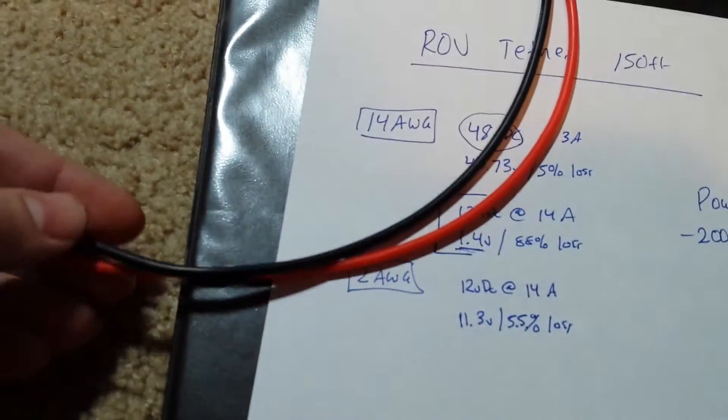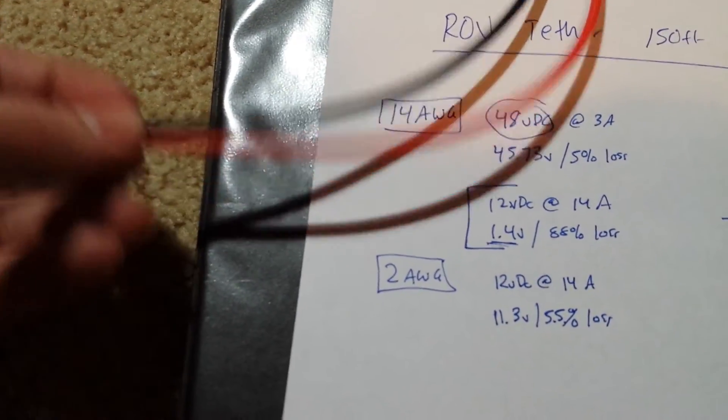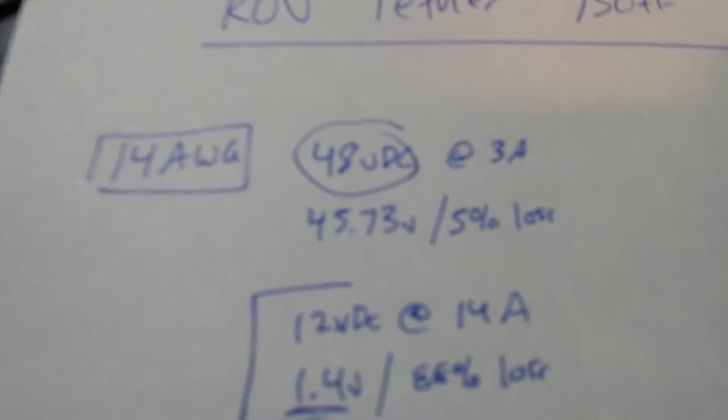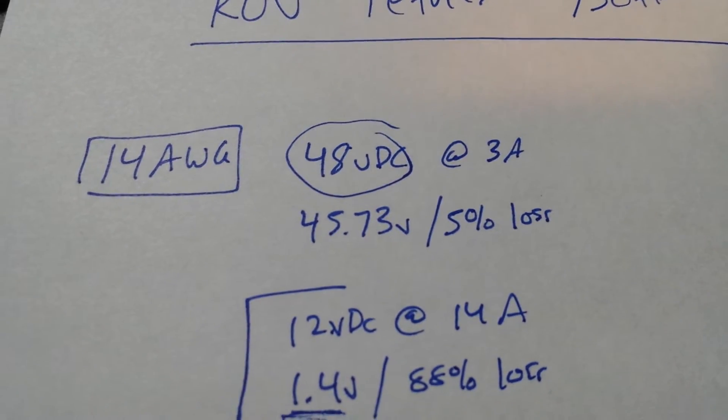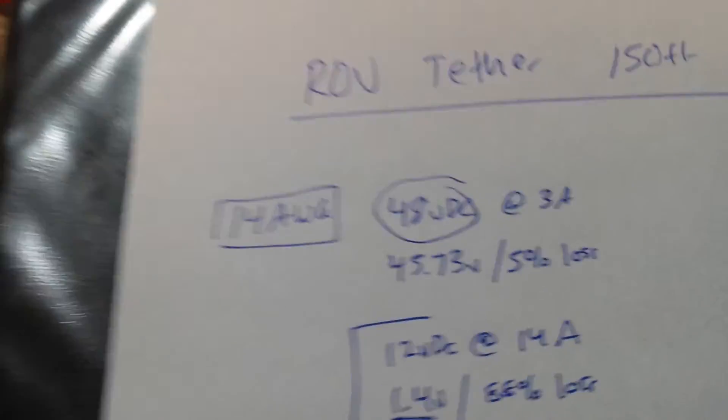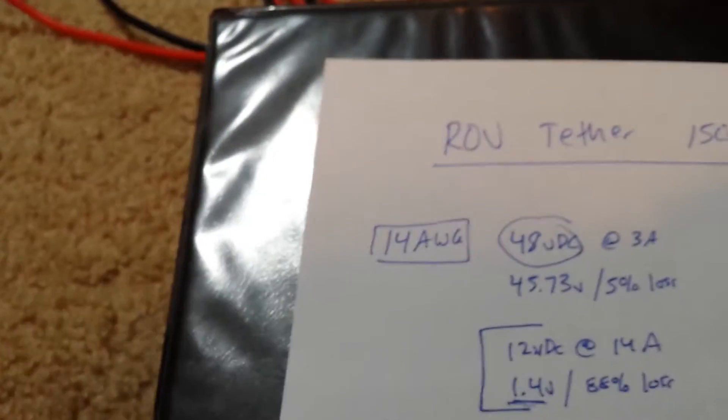I will use 14 gauge, maybe 12 gauge, just depends. And at the other end, when I'm drawing 3 amps there, I've only lost 5% of my voltage. So now, at the other end of this tether, I'm left with 45 volts at 3 amps. So now I gotta convert that down for all my motors.